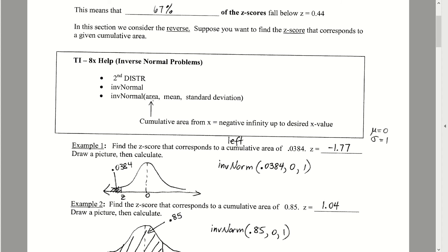Be a little careful here. Previously, normal CDF took four inputs — the z score to find the area. Now, the inverse normal function accepts three inputs in order: the cumulative area, meaning the area to the left of the z score you're looking for; then the mean of the distribution; and then the standard deviation.